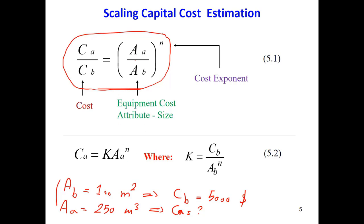The second parameter we need is 250 square meters; the first is 100 square meters. I have the previous cost — the cost for 100 square meters, which is $5,000 — and I just put it into this equation to find the cost of my heat exchanger. The most important parameter here is n, which we call the cost exponent. This cost exponent is usually approximately 0.6.